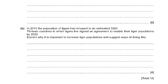To prevent extinction, we must maintain biodiversity — the number of different species that live in an area. We must protect their habitats and legally restrict hunting through laws on poaching.